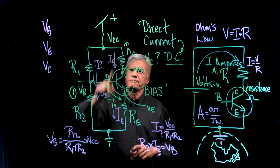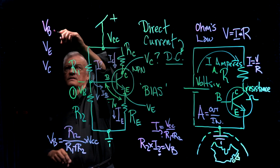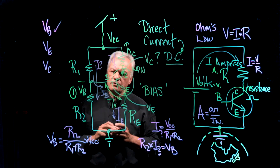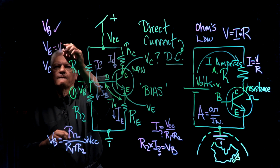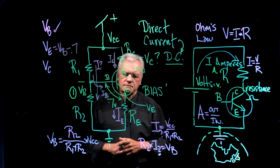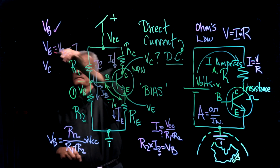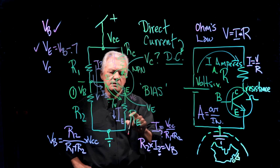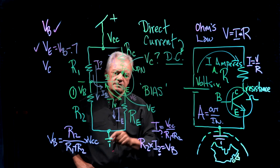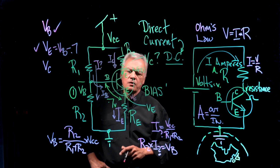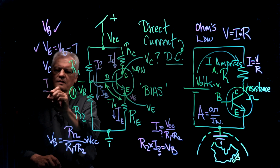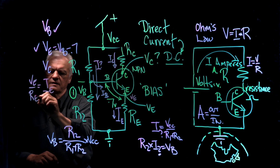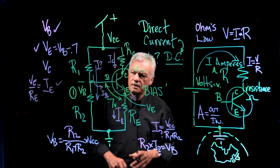We know these resistor values and we know VCC — that's our battery — which means we can calculate VB. Once we've got VB, we subtract the 0.7 volt drop to get VE, the pressure at the emitter. Now, if we have VE and we have RE as a resistance, we've got Ohm's Law again: IE equals VE over RE. That's solved.